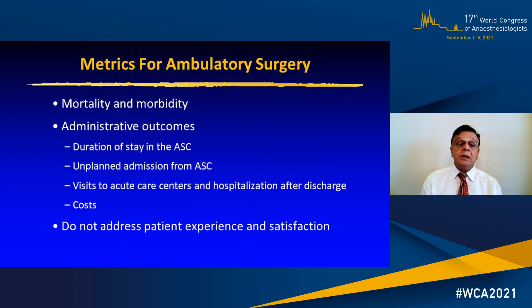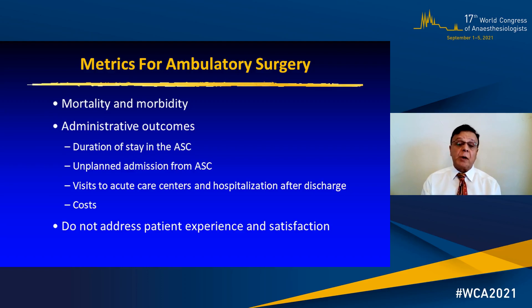The metrics used to assess safety and success of ambulatory surgery include clinical outcomes such as mortality and morbidity, and administrative outcomes such as duration of stay in the ambulatory surgery center, unplanned admission rates, visits to acute care center, and hospitalization after discharge, and overall costs.